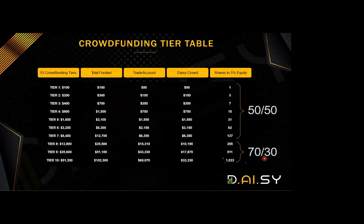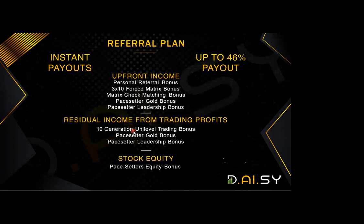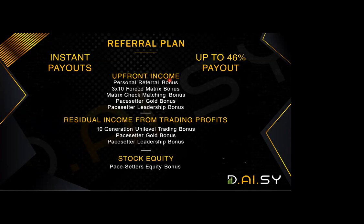People who contribute at the highest level — $100,000 total — have 70% of that, or $70,000, traded by Endotech. Anyone contributing up to level seven puts in a total of $12,700, with $6,350 going into trading. Whatever level you come in at in Daisy determines the level at which you can buy tokens when they launch. There are personal referral bonuses of 5%, a three-by-ten force matrix, and a matrix match bonus for members you introduce.